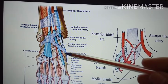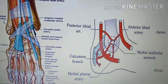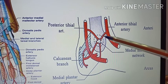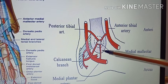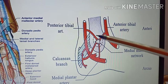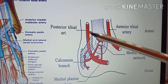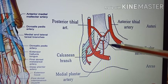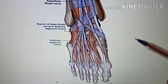Coming to the medial tarsal arteries, these are two to three in number and they form a medial malleolar network by anastomosing with the medial malleolar branch of the anterior tibial artery, the medial plantar artery, and the malleolar as well as calcaneal branches of the posterior tibial arteries.